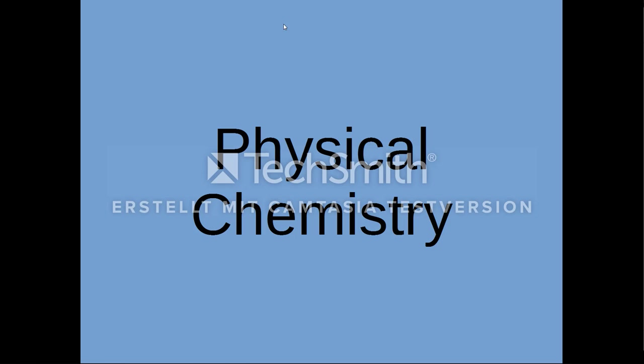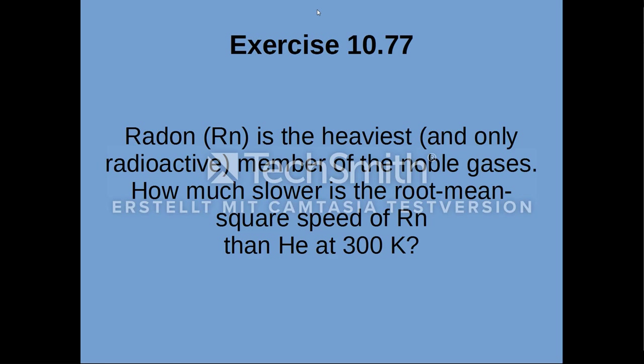I am going to present to you exercise number 10.77 from the book Chemistry the Central Science. It is the following problem. Radon is the heaviest member of the noble gases. How much slower is the root mean square speed of radon than helium at 300 Kelvin?